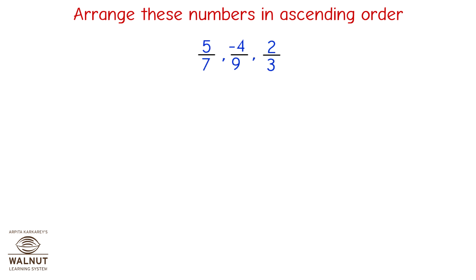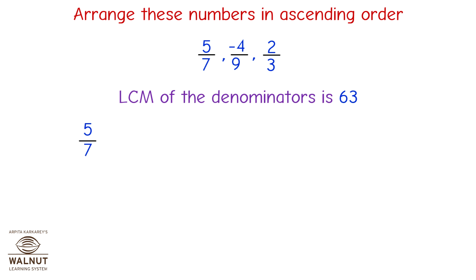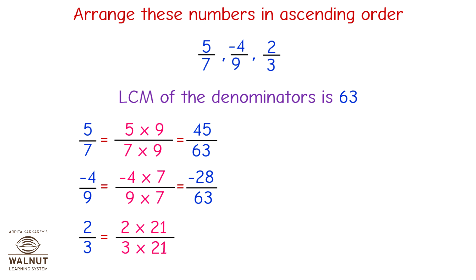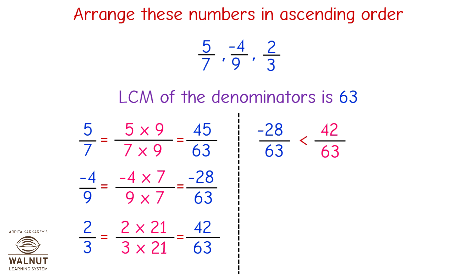Arrange these numbers in ascending order: 5 upon 7, minus 4 upon 9, 2 upon 3. LCM of denominators is 63. 5 upon 7 equals 45 upon 63. Minus 4 upon 9 equals minus 28 upon 63. 2 upon 3 equals 42 upon 63. So minus 4 upon 9 is less than 2 upon 3 is less than 5 upon 7.